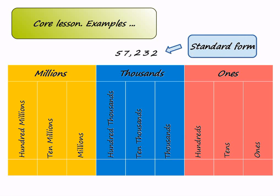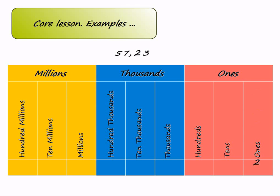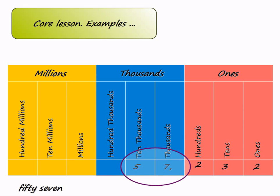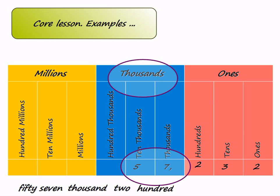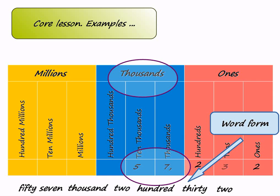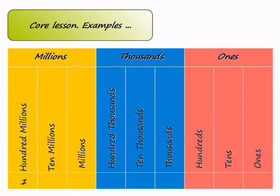How to read numbers using a place value chart. First we place all digits of the given number in their respective place values. Then we start reading the number from the left. In our example it would be 57 thousand — thousand because the digits 5 and 7 are in the thousands period — two hundred thirty-two. So our number is read as 57 thousand, two hundred thirty-two. One hundred twenty-five million, nine hundred seventeen thousand, six hundred eighty-three.